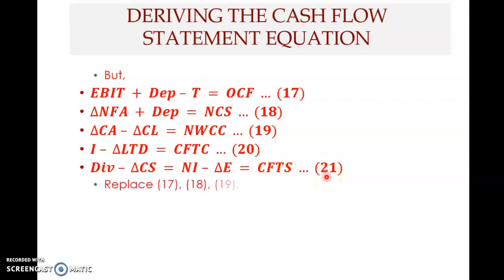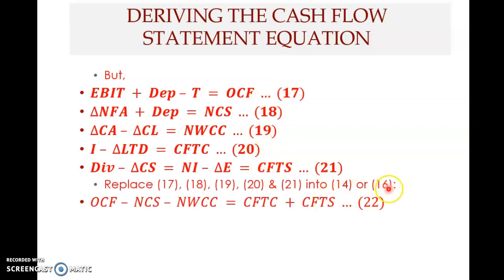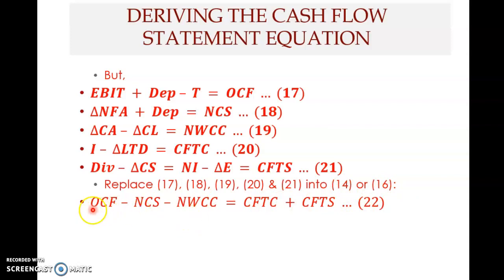So we can replace these equations into equation 14 or 16, and we get: OCF minus NCS — note this is minus, not plus — operating cash flow minus net capital spending minus net working capital change must equal cash flow to creditors plus cash flow to shareholders. This is the simplified equation — equation 22 is actually equations 14 and 16, but rather than expanding, we have reduced it into smaller components: three components on the left and two on the right. Note the negative signs here — negative, negative — but the right hand side is positive.